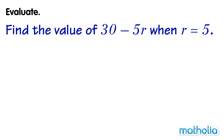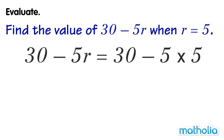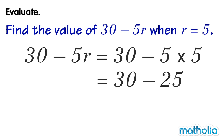Find the value of 30 minus 5r when r equals 5. If we put 5 in place of r, we get 30 minus 5r equals 30 minus 5 times 5. 5 times 5 equals 25. 30 minus 25 equals 5. So when r equals 5, 30 minus 5r equals 5.